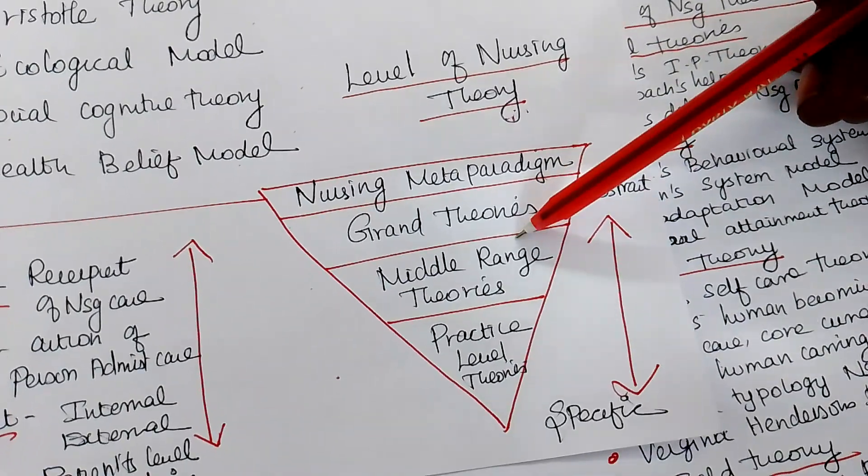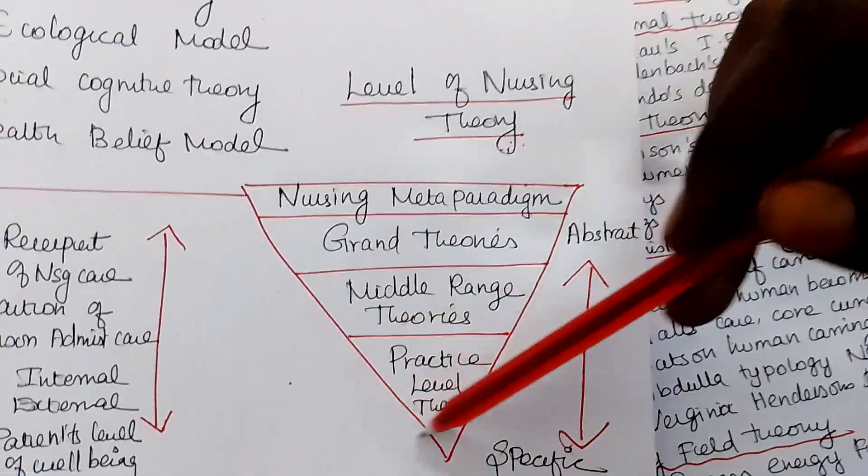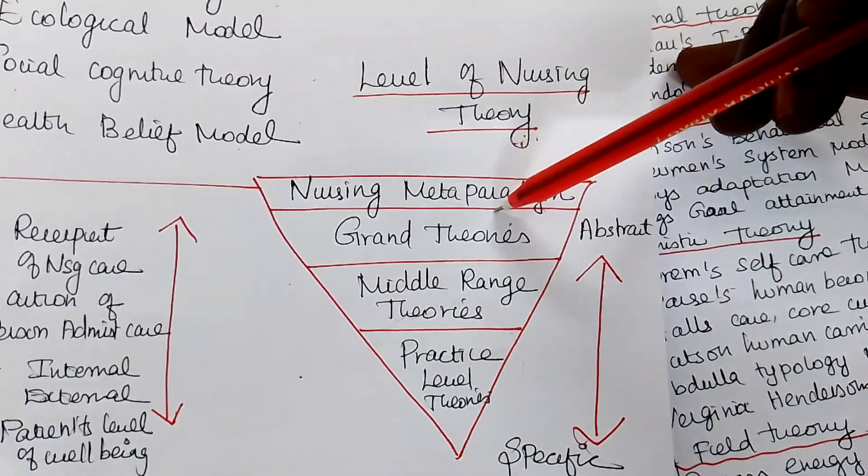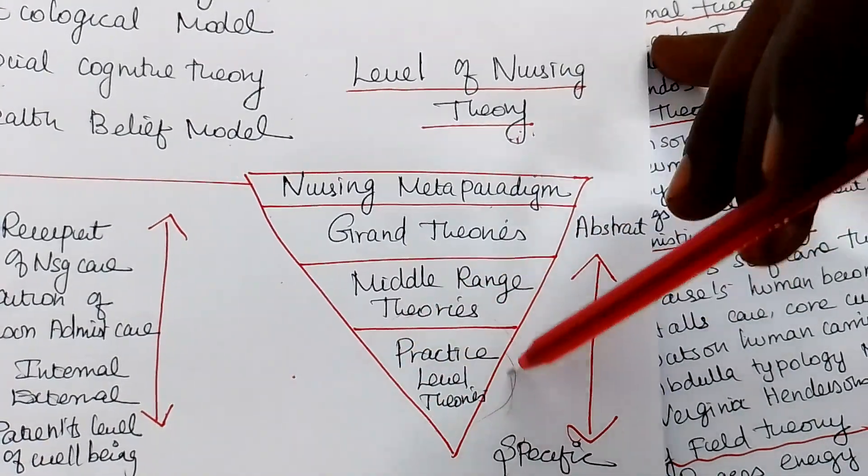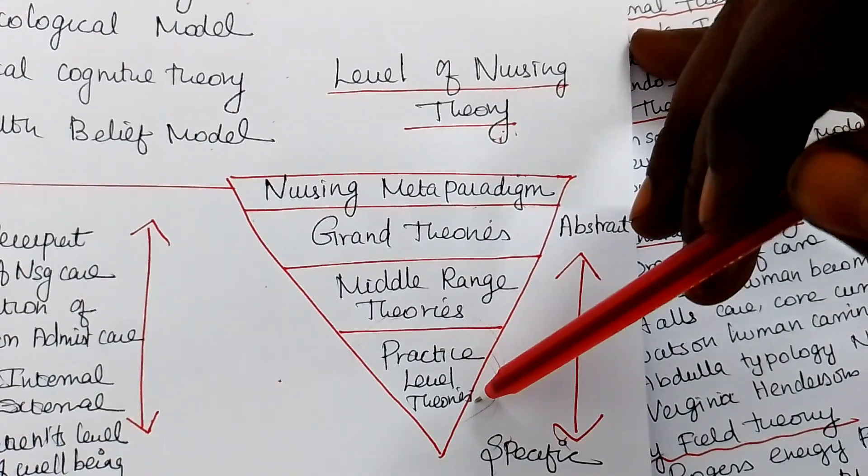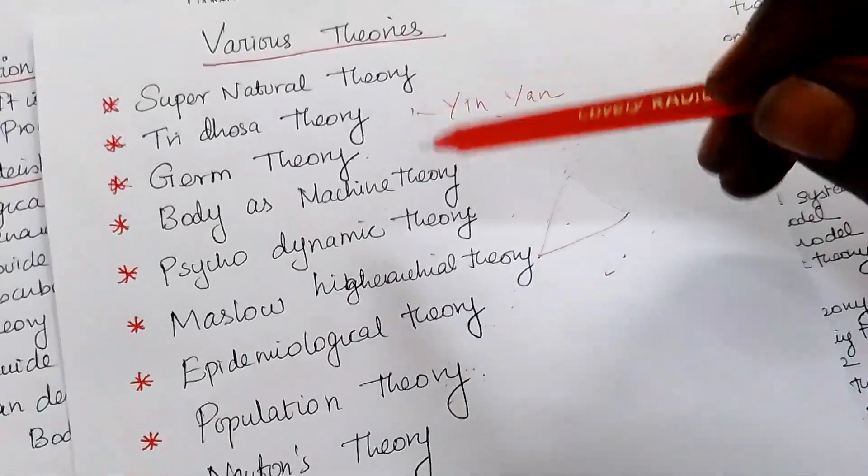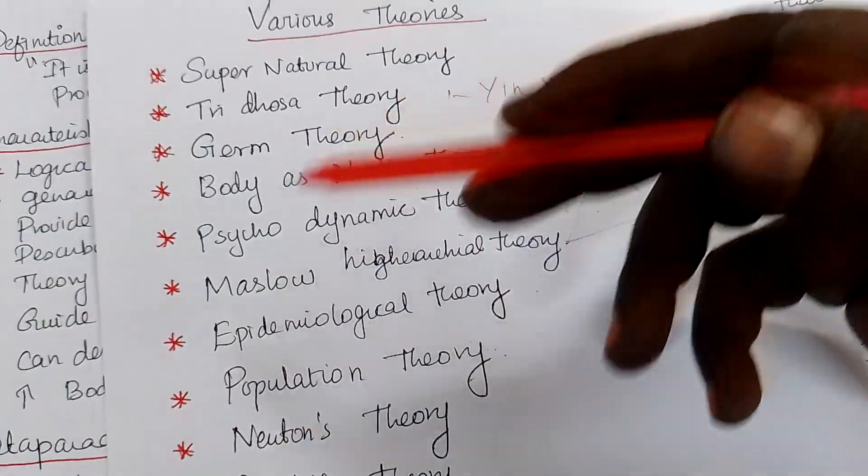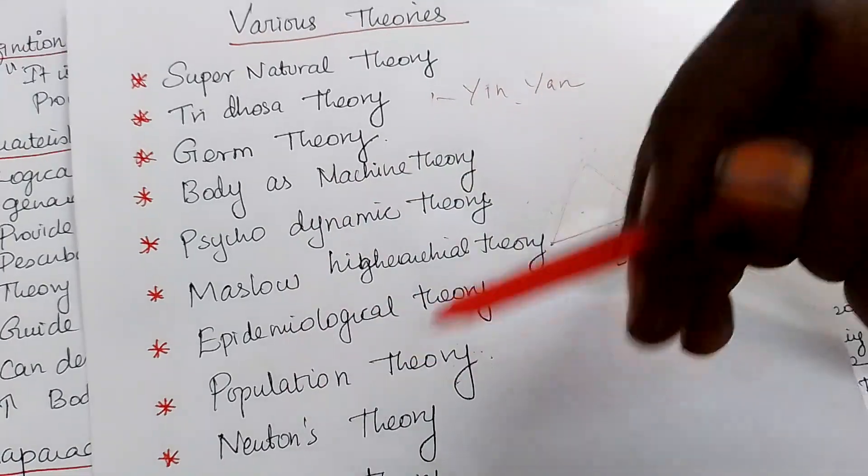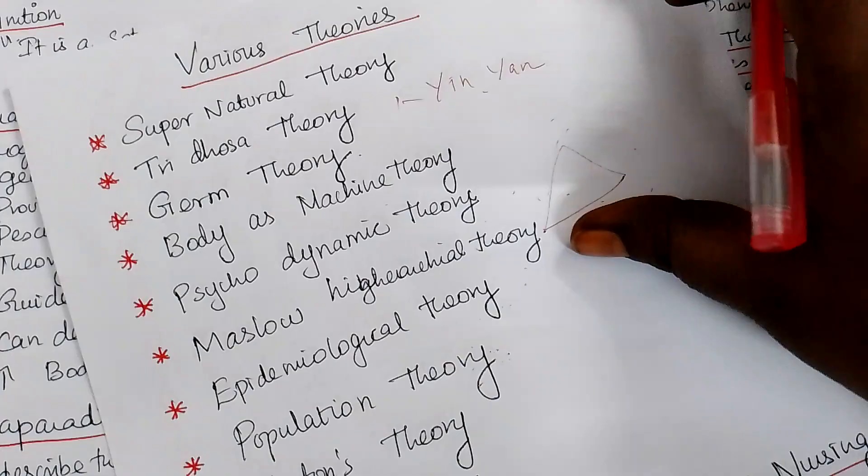Grand theory. Then middle range theories and practice level theories. This is more specific. This is more specific. This is a broader abstract. This is so concrete and so specific. So practice level theories are helpful for evidence-based practice. Right? So you got an idea about the theory. We don't have only in nursing department. We have in the medical, physics, any department, the theory. So you got an idea what is the various theories, existing theories in the medical field from the historically, how the theories were evolving.